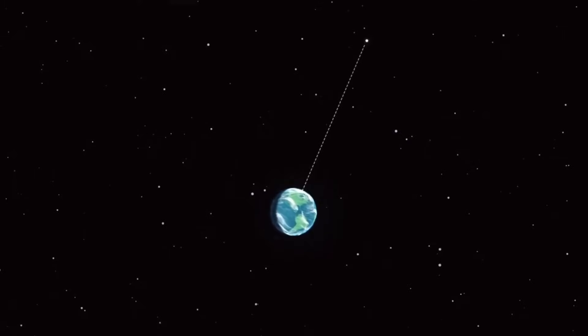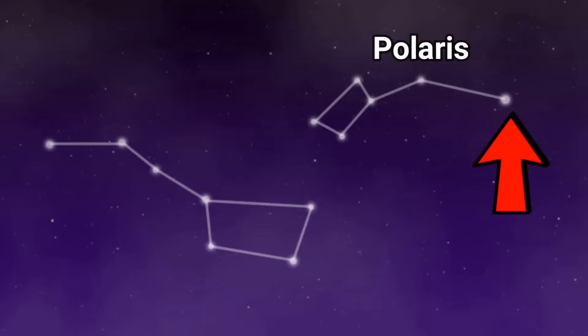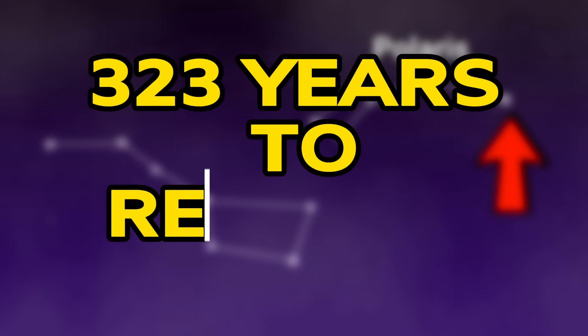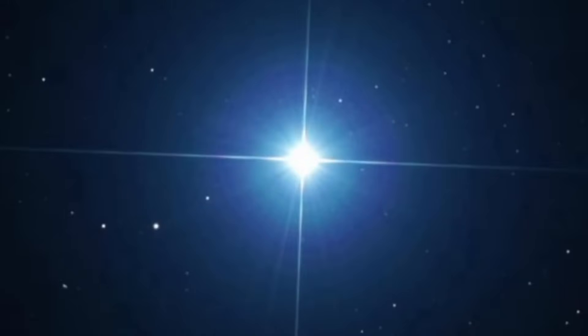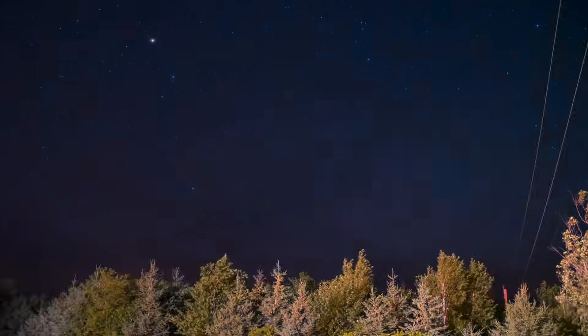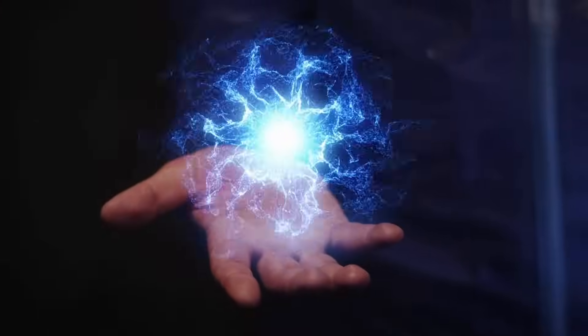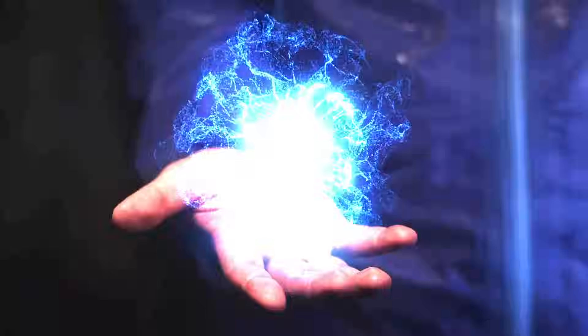One important aspect to consider is the distance between Polaris and Earth. Situated approximately 323 light-years away, the light from Polaris takes about 323 years to reach us. This means that the light we currently see from Polaris is as it was 323 years ago. If Polaris were to explode today, we wouldn't know about it until 323 years from now.